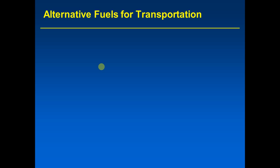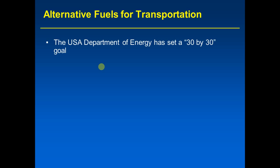We will be mainly focusing on alternative fuels that apply to small vehicles — cars and small trucks. The USA Department of Energy has set a '30 by 30' goal, which means that 30% of gasoline use will be from alternative fuels by 2030. Around 10 years ago, the U.S. Department of Energy put forth this goal that by 2030, 30% of the energy for transportation currently coming from gasoline will be from alternative fuels.